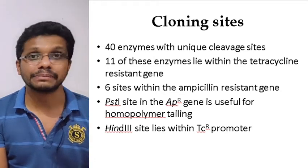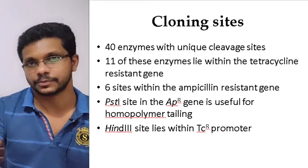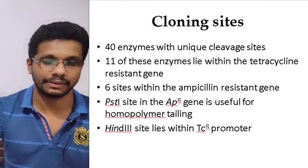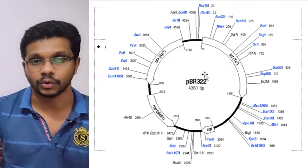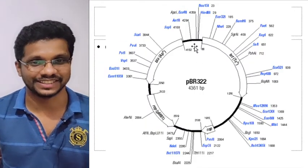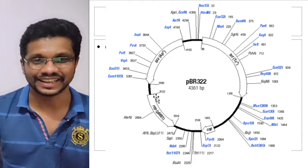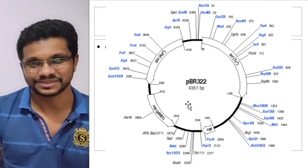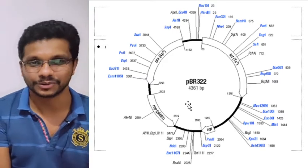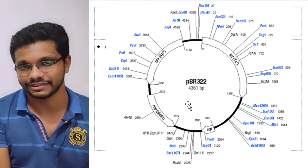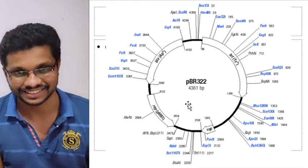But basically, PBR322 is a cloning vector — it won't express the protein, but it can amplify it. This is the full image. PBR322 is having 40 different restriction endonuclease recognition sites. You can find the PstI here, HindIII here, and EcoRI. If you take a close look, the numbering actually starts from the EcoRI site — from EcoRI, it's position 1, and then the nucleotides are numbered from there.